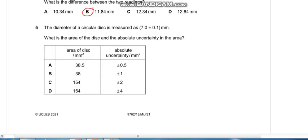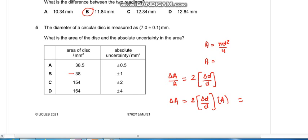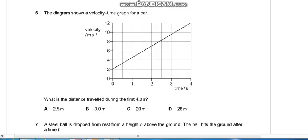Question number five: The diameter of a circular disc is measured 7 ± 0.1 mm. What is the area of the disc and absolute uncertainty in the area? Area equals π d² / 4. D is 7, so the area becomes 38. Now we need to find the absolute uncertainty. Change in area over area equals (d squared) 2 times change in diameter over diameter. The absolute uncertainty becomes change in area equals 2 into change in diameter over diameter multiplied by area. Plugging in the values gives ±1, so B is the appropriate answer.